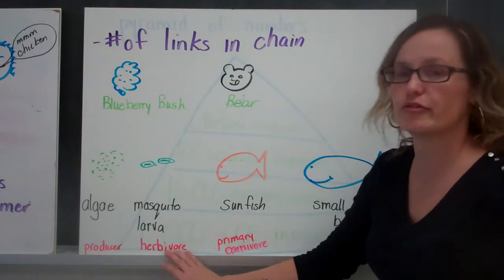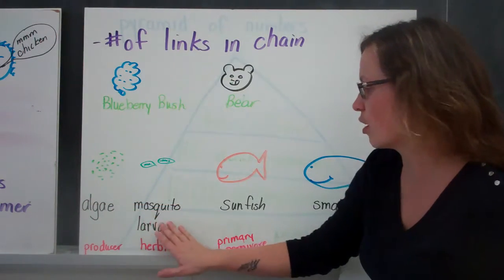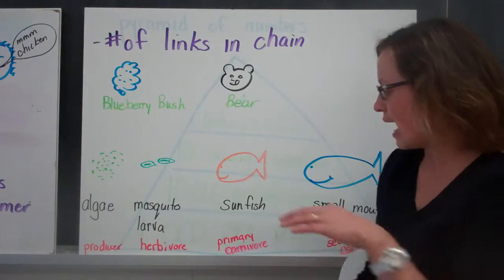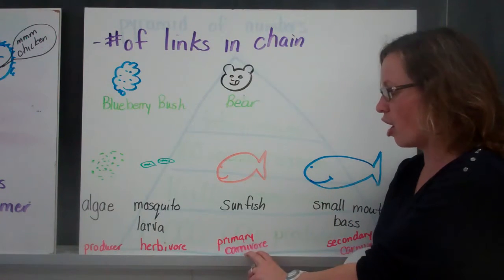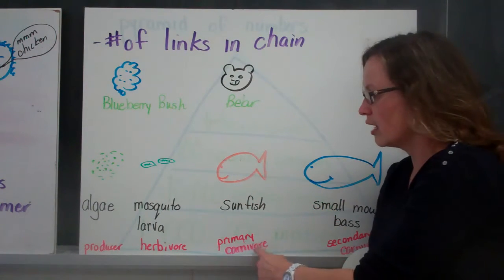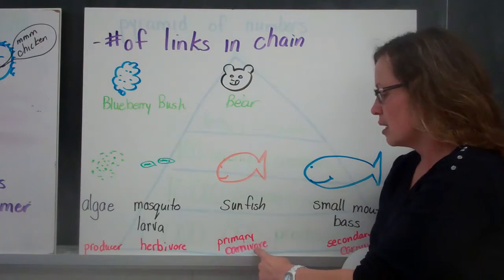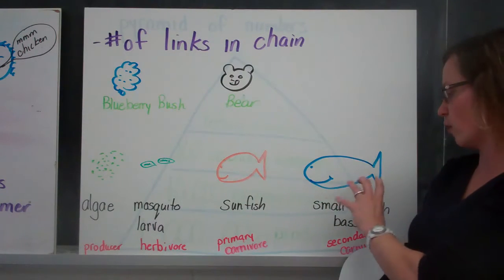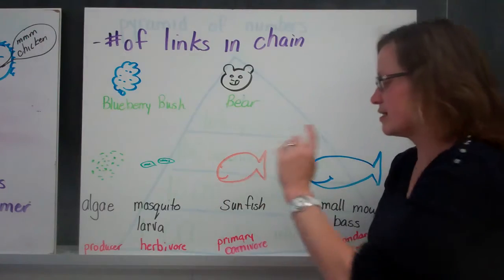And in this situation, we have a herbivore that's eating our algae, so our mosquito larvae is our herbivore. And then we have a primary carnivore, so the Sunfish is a carnivore, and it eats the mosquito larvae. But we also have a secondary carnivore, the smallmouth bass, that's eating the Sunfish.